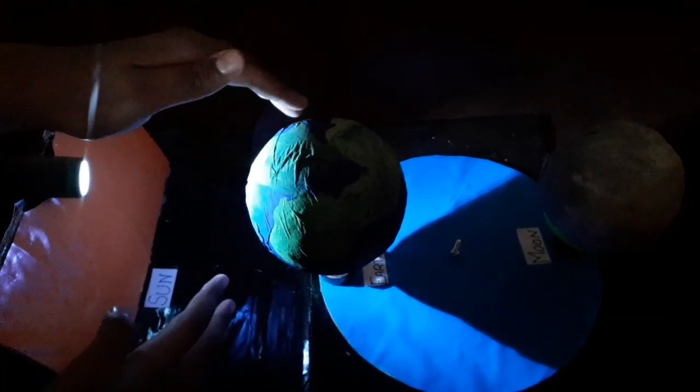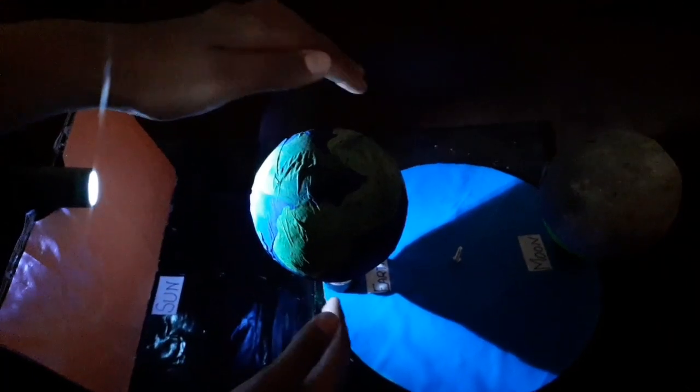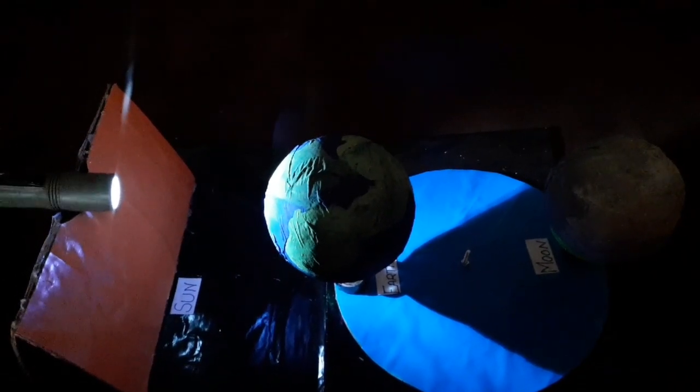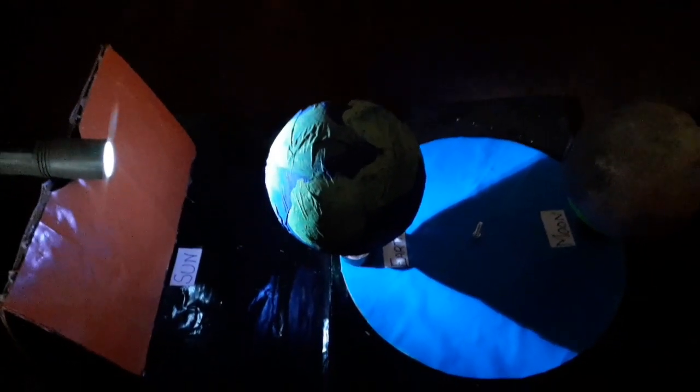In lunar eclipse moon gets disappeared as earth comes between sun and moon breaking the path of sunlight. Since sunlight can't reach moon, we can't see moon and it gets disappeared which is called lunar eclipse.